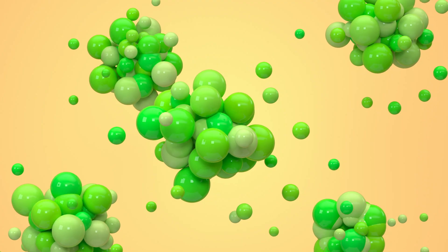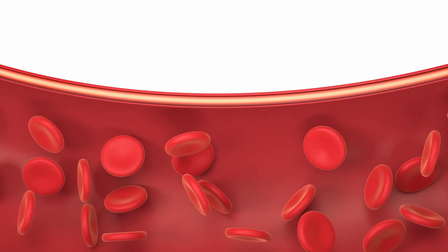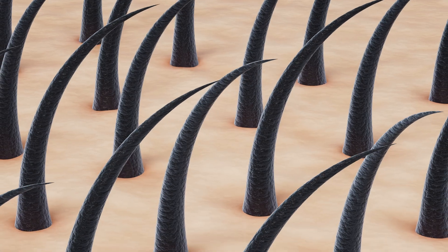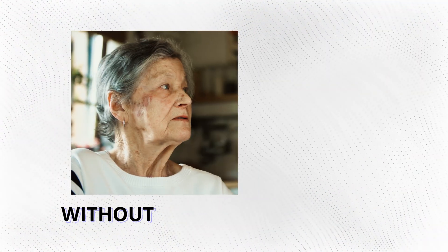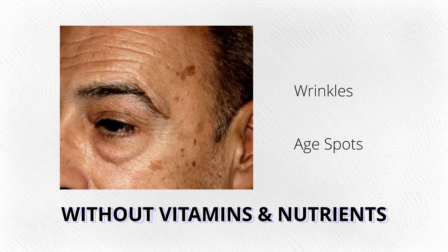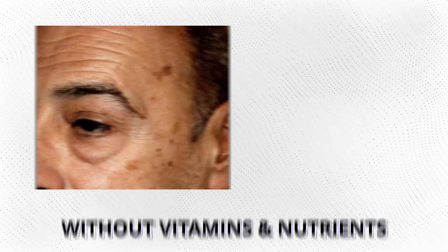Another way alcohol causes accelerated aging is by causing vitamin and nutrient deficiencies. Alcohol can interfere with the absorption of important vitamins and nutrients, such as vitamins A, B, and C. These vitamins and nutrients are crucial for maintaining healthy skin, hair, and nails. Without them, our skin can become dry, dull, and prone to wrinkles and age spots.